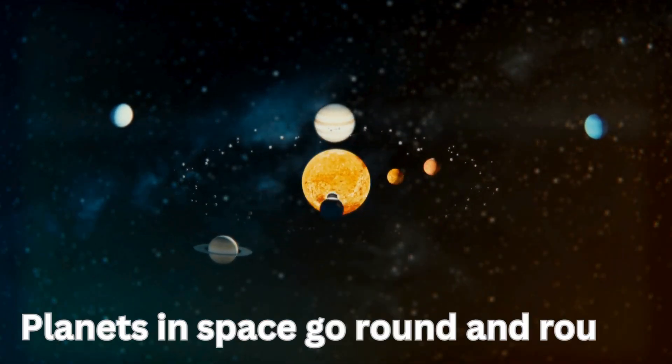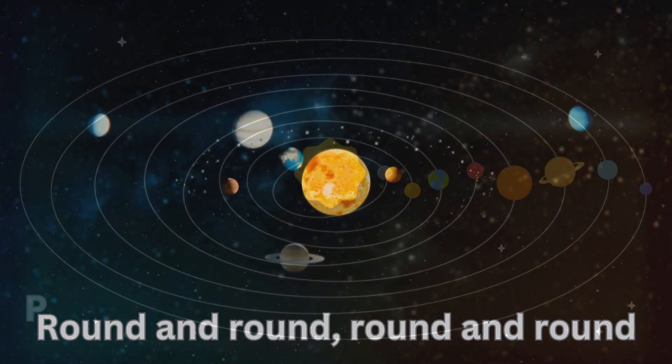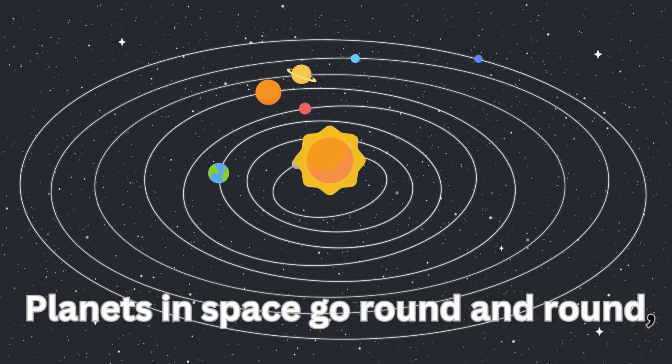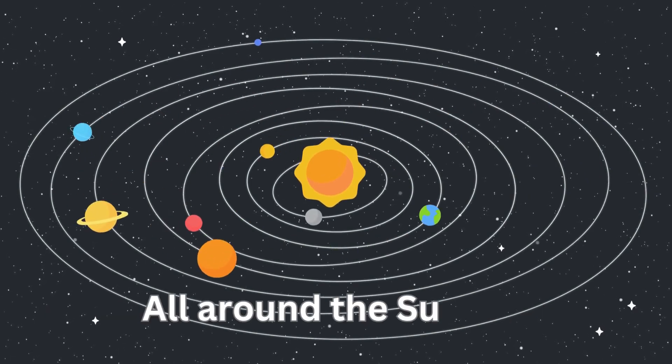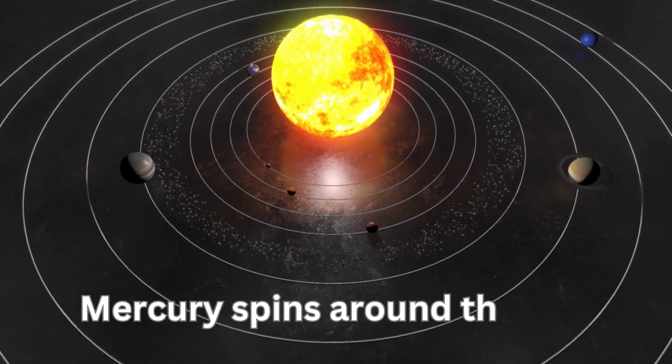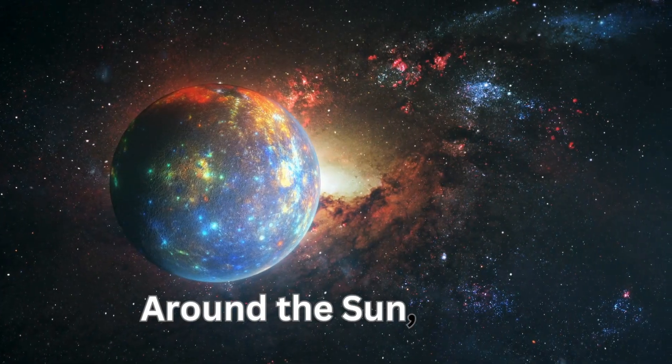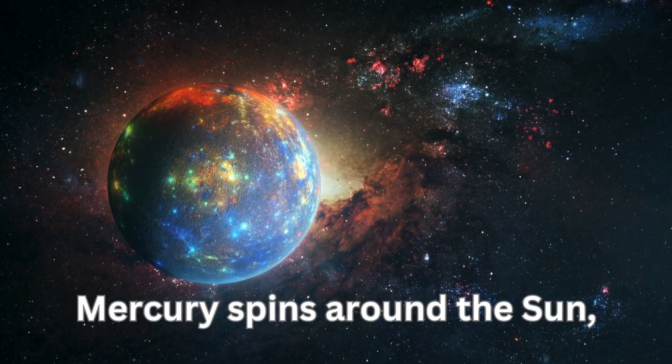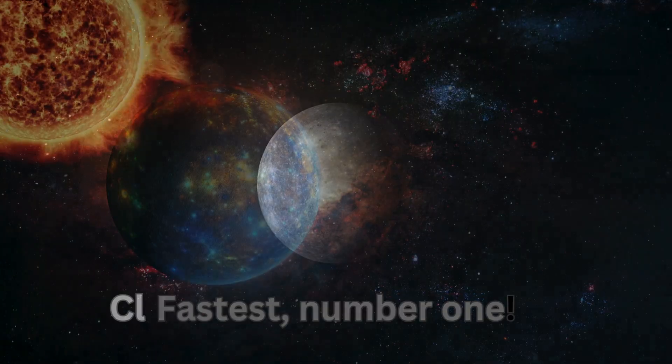Planets and speeds go round and round. Mercury spins around the sun, around the sun, around the sun. Mercury spins around the sun, fastest number one.